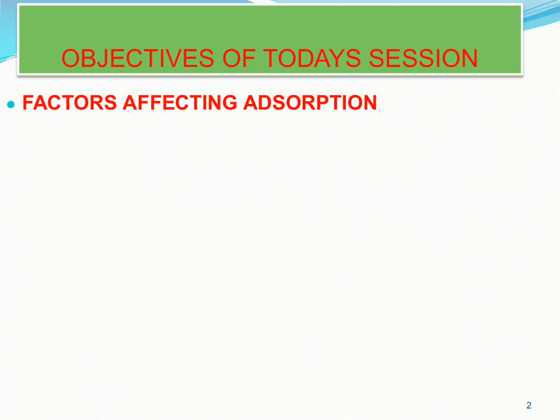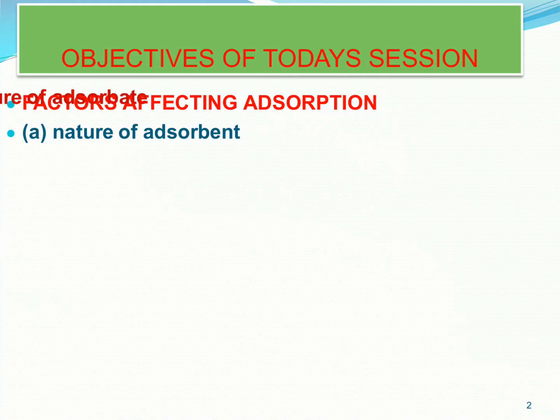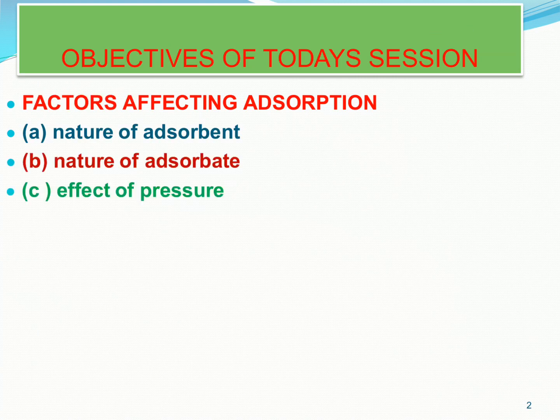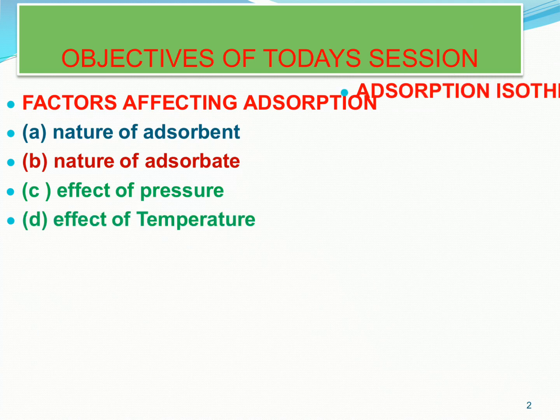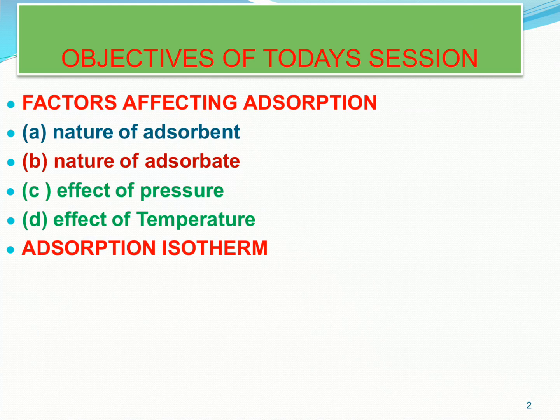Good morning students. Today is the second session for the chapter Surface Chemistry. The objectives for today's session are: we are going to learn about the factors affecting adsorption. Those factors are: nature of adsorbent, nature of adsorbate, effect of pressure, and effect of temperature. At the end of this session we will also learn about the adsorption isotherm, which is also very important.